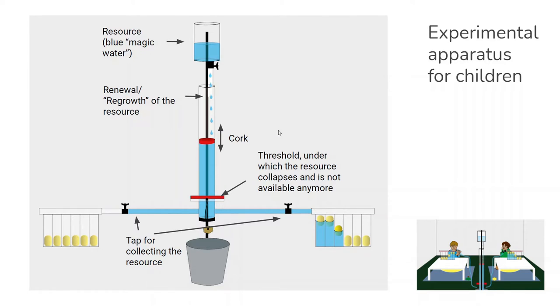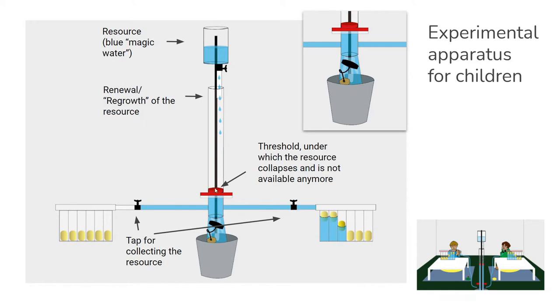Now, the thing is that the cork shouldn't go below this threshold, because if it does, then the resource collapses and is not anymore available. Basically, there was a mechanism that made sure that the water inside the cylinder would just fall right into this bucket, and then the experiment would be over. So the challenge is for the children to keep the water level above this threshold.